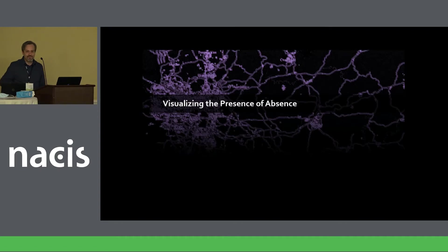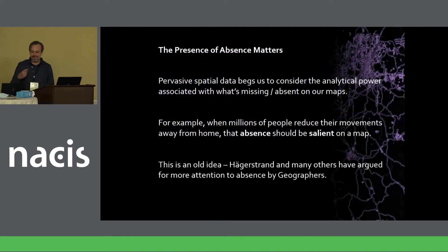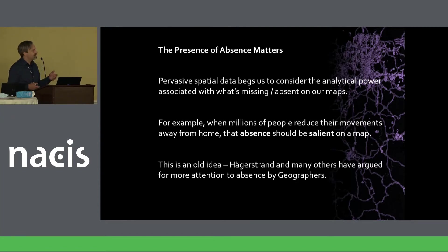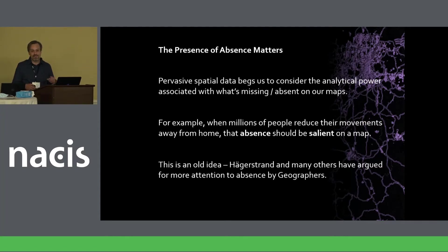I'll start by talking more broadly about visualizing the presence of absence, which is something I've written a little bit about a couple years ago before we ended up living it hard. I'm coming from an area of thinking about how we have lots of interesting pervasive spatial data. We've seen a lot of examples even in this session — incredible depth of analytical capabilities from what we can understand about neighborhoods from demographic and satellite data. That makes me think about what's missing and absent in those sources. Hagerstrand in particular, in the 70s, wrote about how geographers should maybe pay more attention to what's not present on maps.